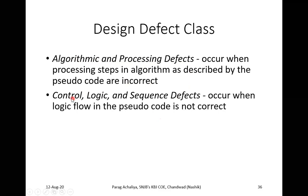Control logic and sequence defect occurs because of control statements, logic statements, or program sequence. Control logic and sequence defects occur when the logic flow in the pseudocode is incorrect. If that program flow is incorrect, this type of defect will be generated. For example, a program has an add function but directly calls delete — that is the defect in your pseudocode sequence, logic, or control.